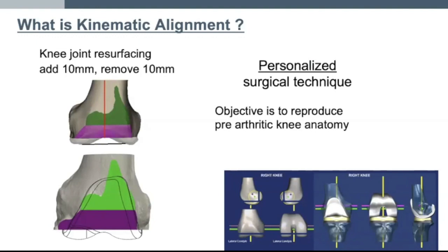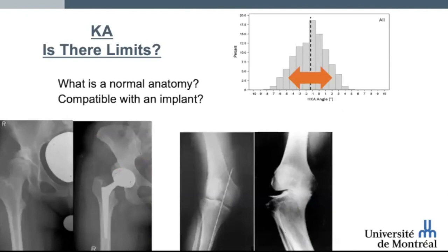First, I'll start by describing what kinematic alignment is. It is a true resurfacing of the knee joint, removing the amount of bone and cartilage you want to replace it with the same thickness. It's a personalized surgical technique where the objective is to reproduce the pre-arthritic knee anatomy. By reproducing pre-arthritic anatomy, we should question ourselves: is there some limits? What is the normal anatomy and to what extent is it compatible with long-term implant survivorship? We all know there are some pathological anatomies which may not be favorable to replicate.